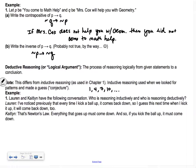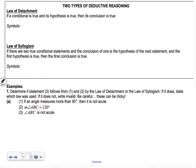Lauren and Caitlin have the following conversation. Who is reasoning inductively and who is reasoning deductively? Lauren says, I've noticed previously that every time I kick a ball up, it comes back down. So I guess this next time when I kick the ball up, it will come back down too. That's inductive reasoning because she's noticing that when she does something, something always happens. She's making a guess based on previous patterns. Caitlin says that's Newton's law. Everything that goes up must come down. So if you kick the ball up, it must come back down. That's deductive reasoning. It's using logical reasoning, using a given definition or a given theorem, in this case Newton's law, to say that's been proven before, so therefore this has to be true.